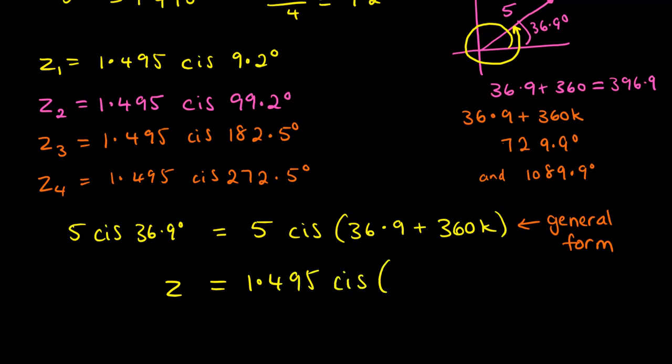So z will be equal to 1.495 cis, now if we are dividing the argument by 4, then we get the 9.2 + 360 divided by 4 is 90. So it's 9.2 + 90k. And we have our solution in a general form now. And this, I should have noted, was in degrees. Otherwise it looks like it might be radians. So here's our general form of that solution.